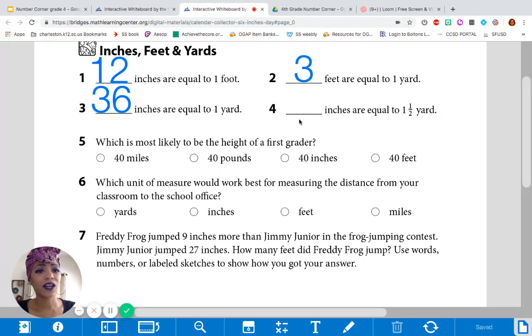So, number 4. How many inches are equal to 1 and a half yards? How could we figure that out? How many inches are in half of a yard? Half of 36, guys. Right. 18 inches. 18 inches would be in half of a yard. So, 36 plus 18 gives us how many inches? What is that? 54. You got it. 54 inches.